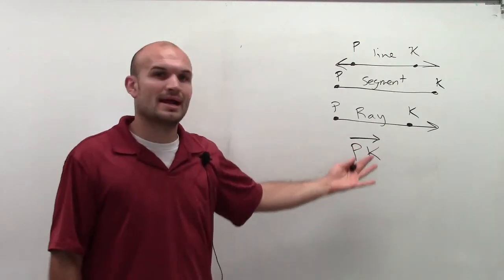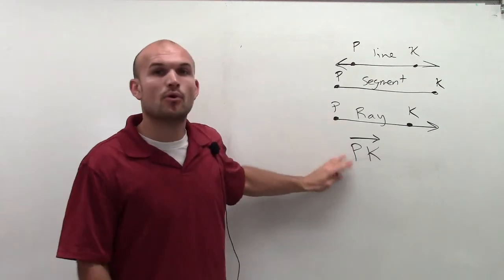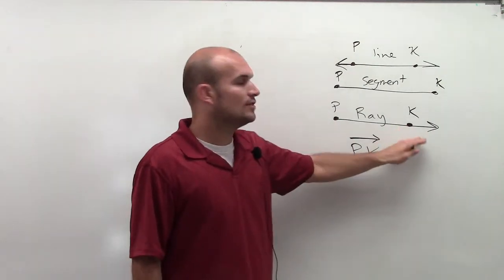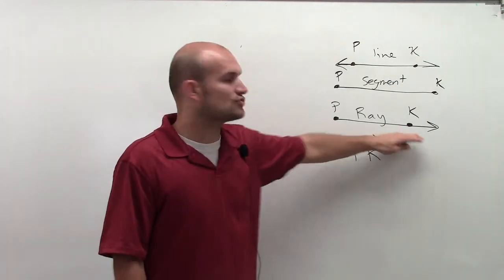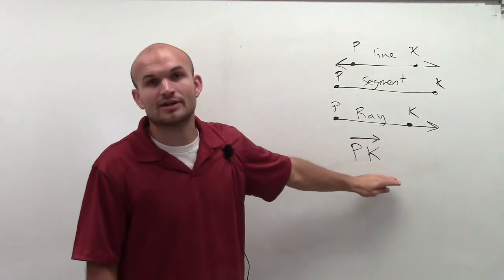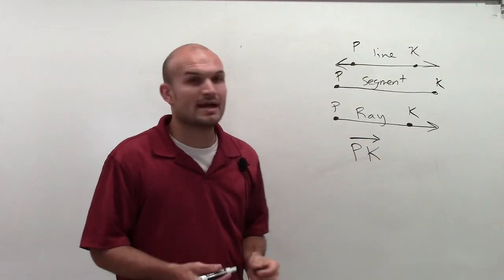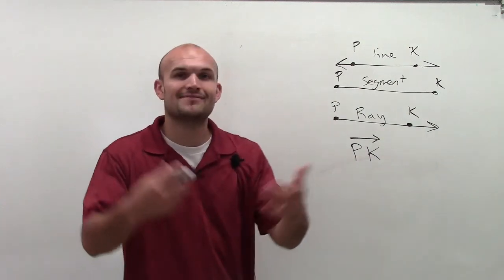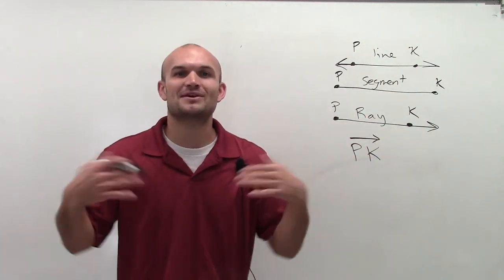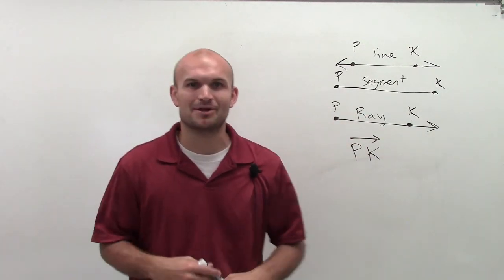But when talking about a ray, we like to write the endpoint first, and then the point that its direction is going infinitely towards as your next point. So that is how I would write a ray, and hopefully gave you that good explanation. If you have any questions, please comment down below. Thanks.